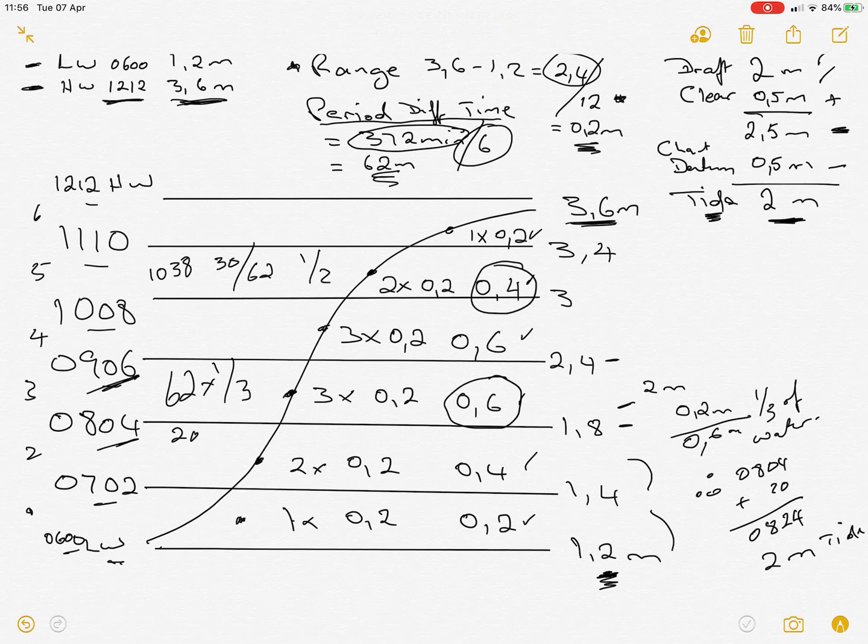So from 3 meters, half of 0.4 is going to be plus 0.2. Therefore at 1038 we're going to have 3.2 meters of tide.